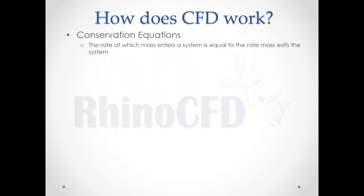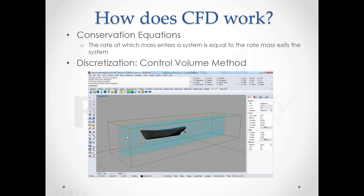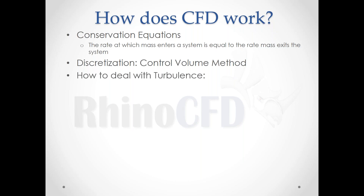CFD solves conservation equations. Effectively, mass entering a system equals mass exiting — there's always a balance. We then discretize this: we take the domain — the green box representing the area we're analyzing — and chop it down into smaller cells, then apply the same principle to every one of those little cells. The equations governing this are complex but the principle is quite simple.